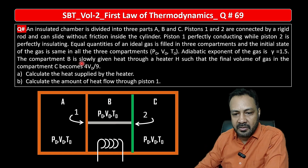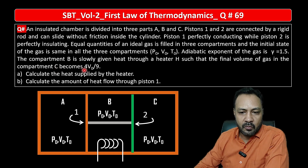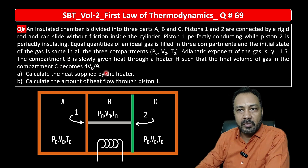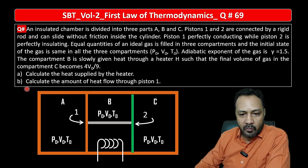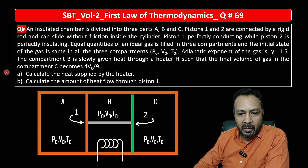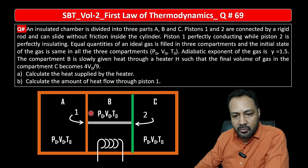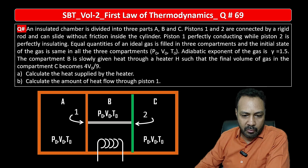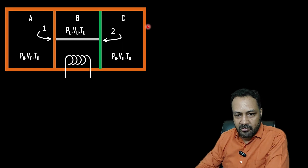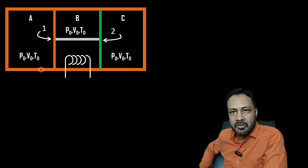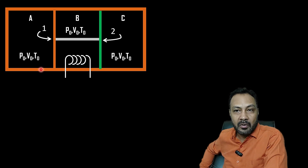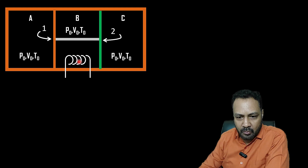The final volume of the gas in compartment C becomes 4V₀/9. By the time this happens, we have to find: what is the heat supplied by the heater, and calculate the amount of heat that flows through piston 1 into part A. This is what we need to solve. Initially, parts A, B, and C all have the same state: P₀, V₀, T₀, and the same number of moles, which equals P₀V₀/RT₀.